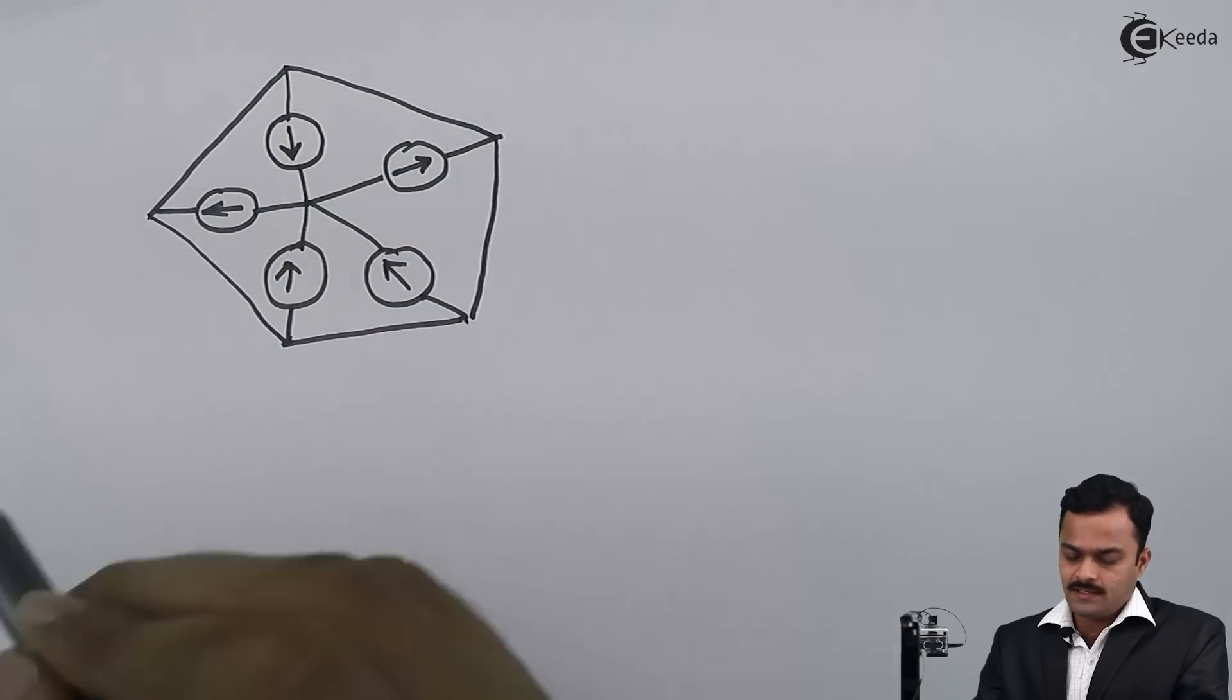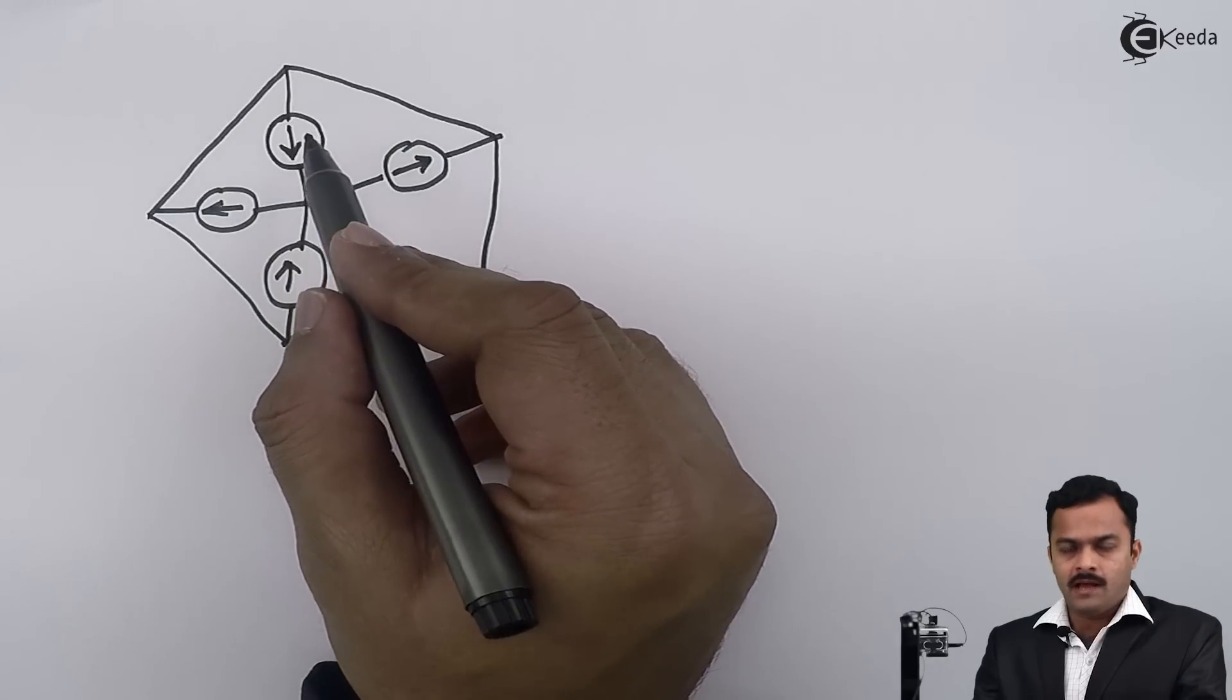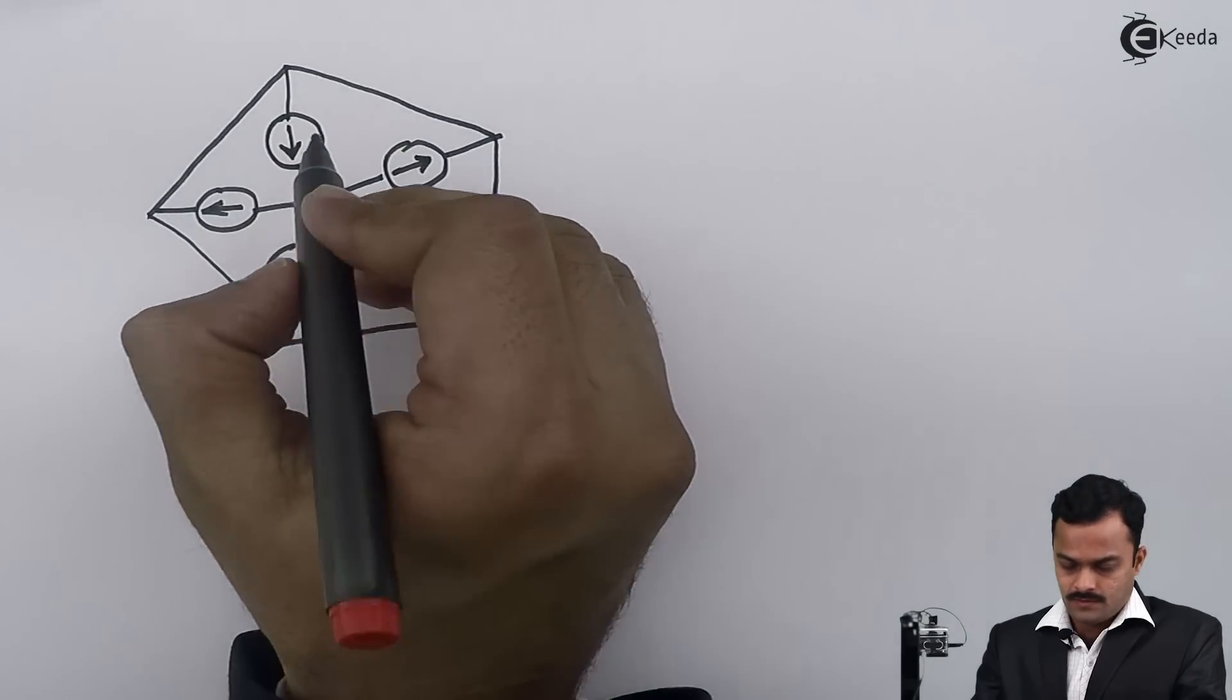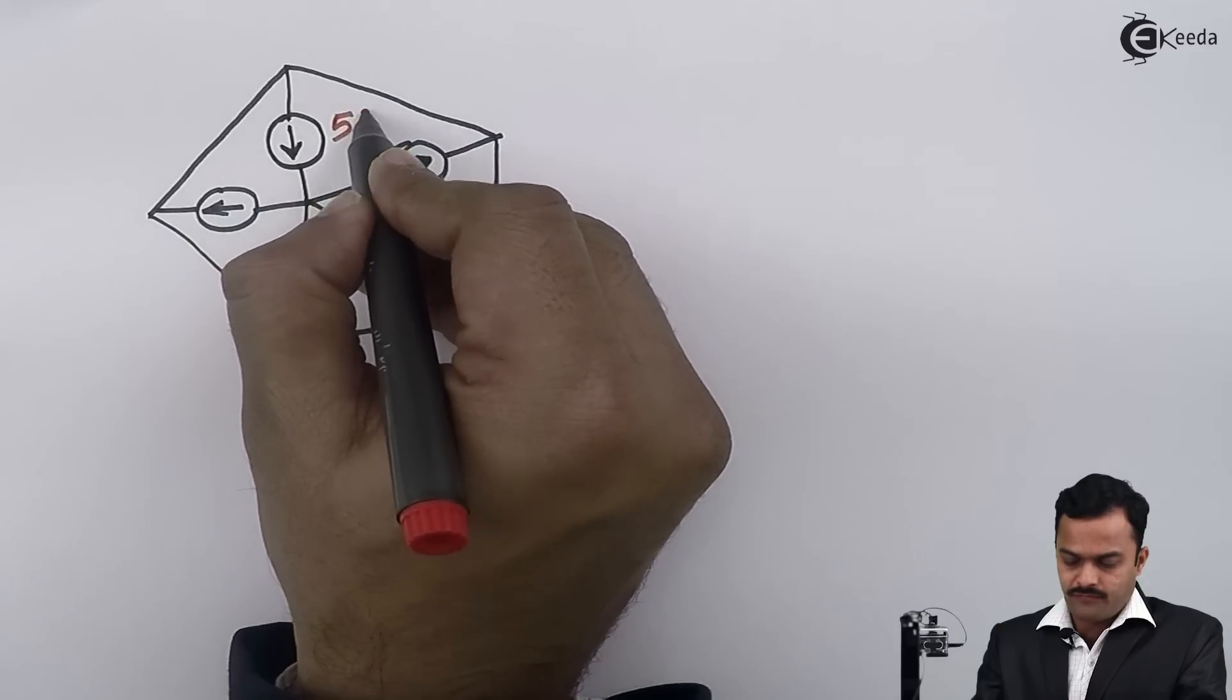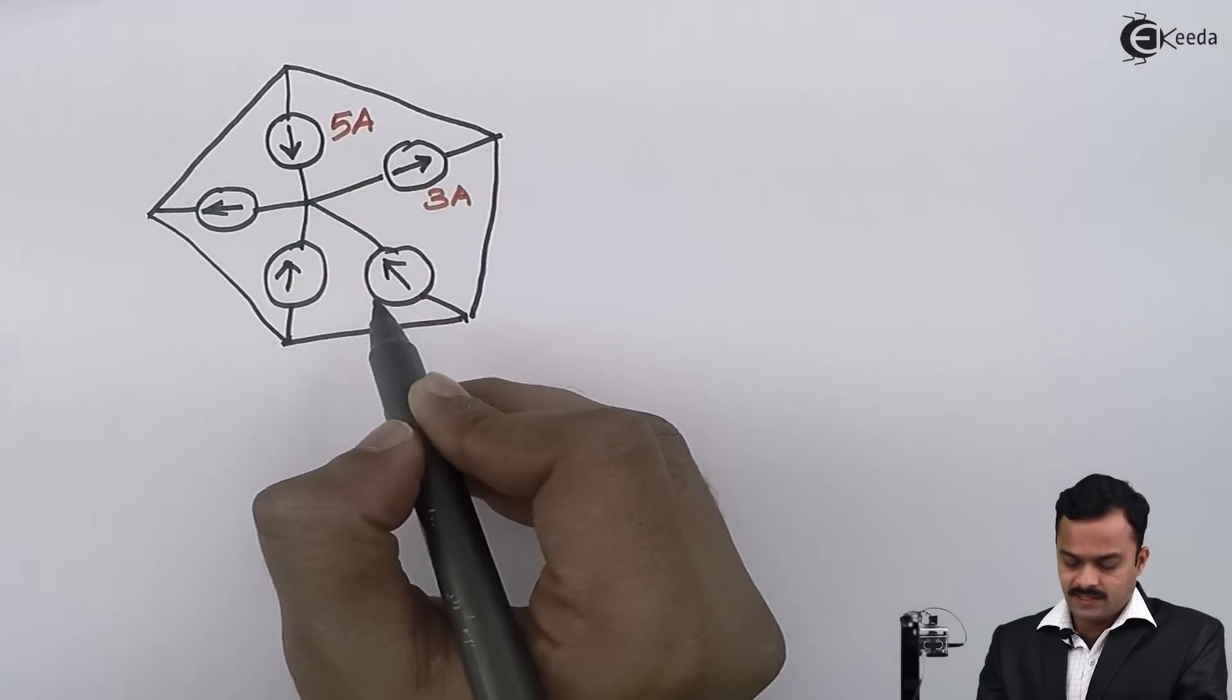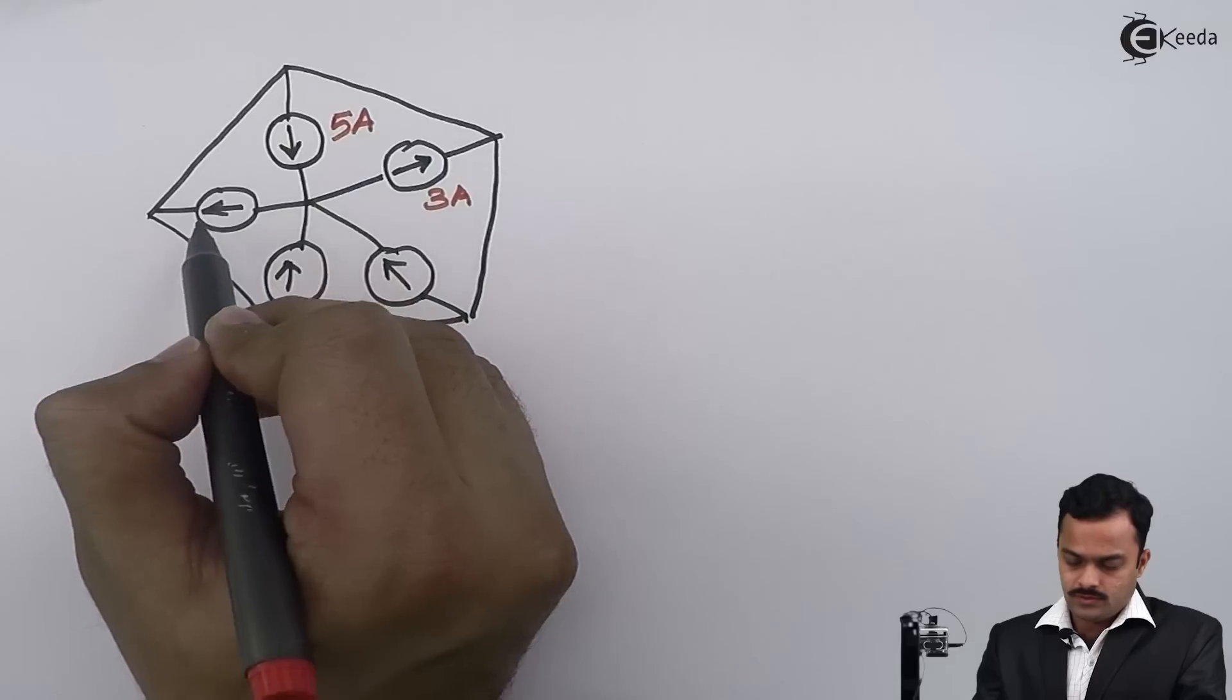I consider this structure having five branches and all of them having a current source. Let's give the values to them. So it's 5 ampere, this is 3 ampere, and these three currents are unknown. So I will consider this as ix, iy, and the third one is iz.